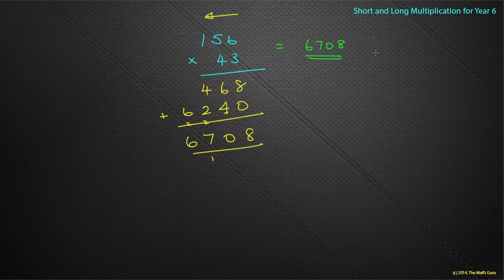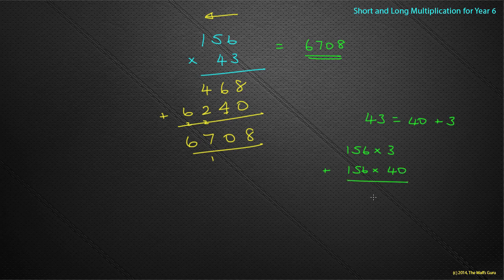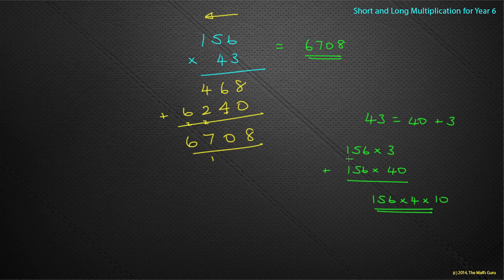Now you should have all the tools needed to work this out. But remember, 43 is the same as 40 plus 3, so you could work it out as 156 times 3 added to 156 times 40. And you can rewrite that as 156 times 4 times 10. Lots of ways of doing this — in your head or on paper. Just remember, that placeholder 0 and all other placeholder 0s are really important.